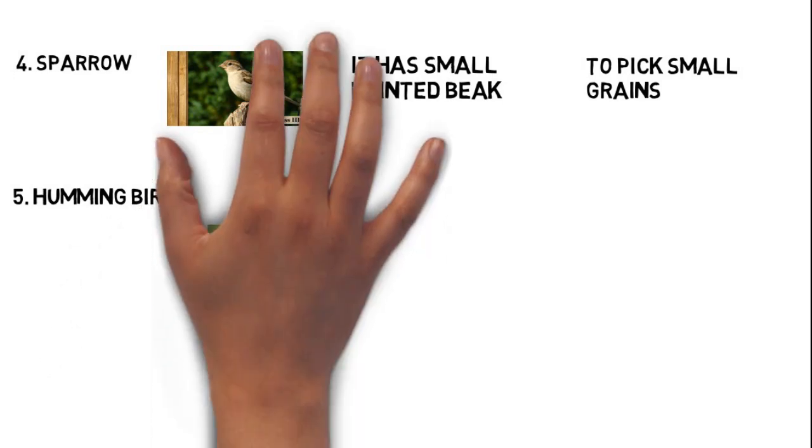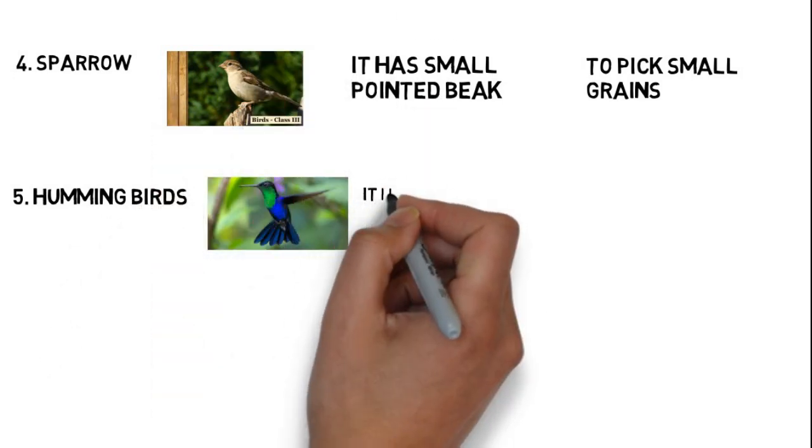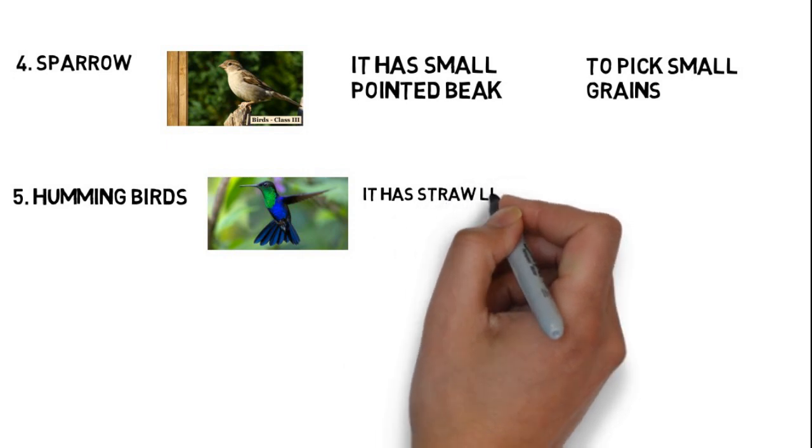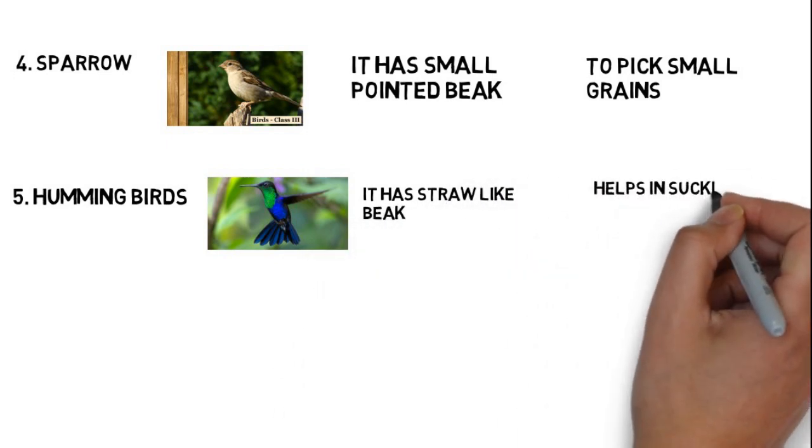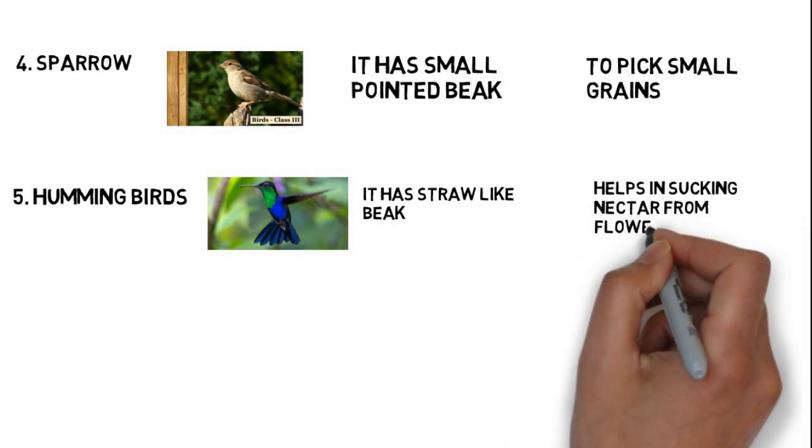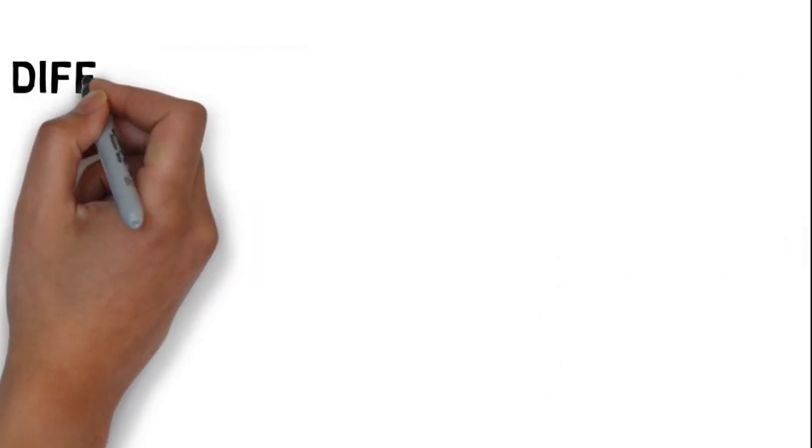Number five, hummingbird. Hummingbirds have straw-like long beaks to help in sucking nectar from flowers.